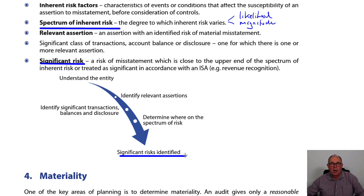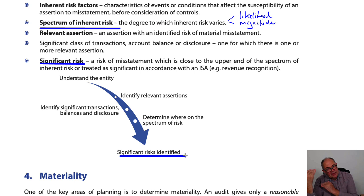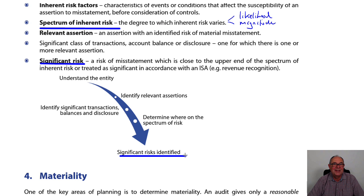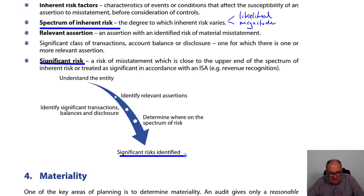You'll talk more about risk in the next chapter. But if you've got a three-page scenario with all sorts of problems, is the fact it's a new client a significant risk? Probably not — that's quite low down on the pecking order. If you notice they're not a going concern and it's a new client, the significant risk has to be that they're not a going concern. As always, look for those things that are large and most likely, use the phrase 'significant risk' for something on the upper end of the spectrum of risk.